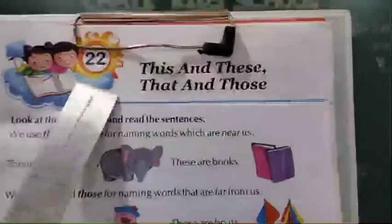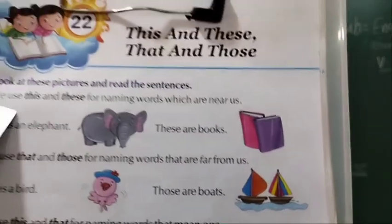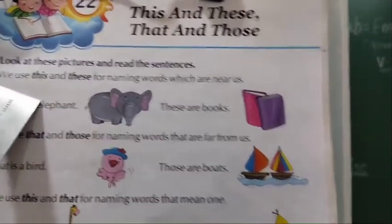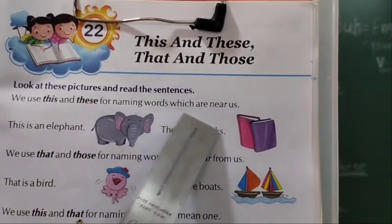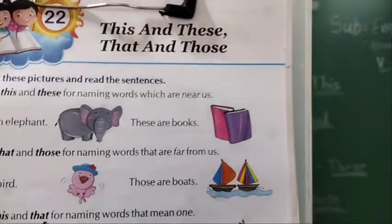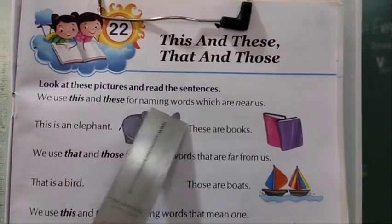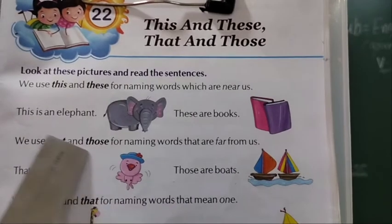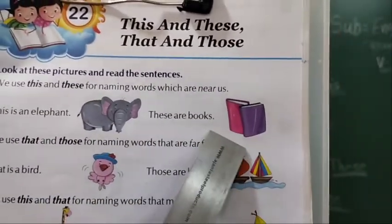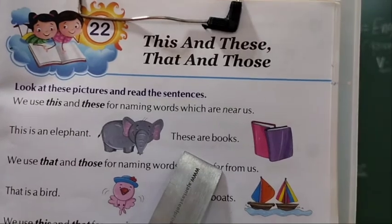So this is our lesson number 22: This, These, That, and Those. Let's look at these pictures and read the sentences. We use 'This' and 'These' for naming words which are near us. If the object is single, we use 'This'. For example: This is an elephant. And if objects are more than one, we use 'These'. For example: These are books.